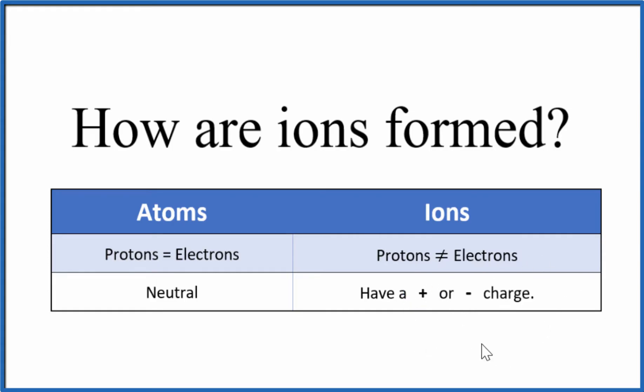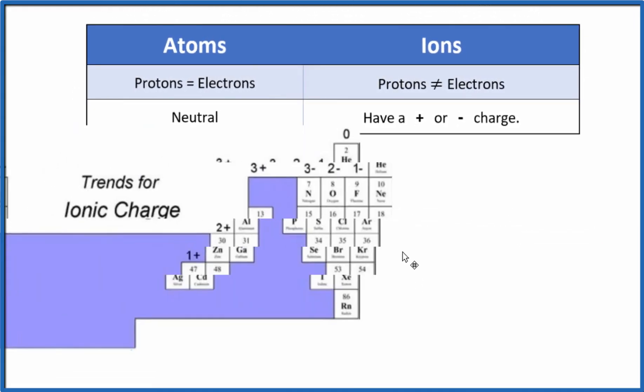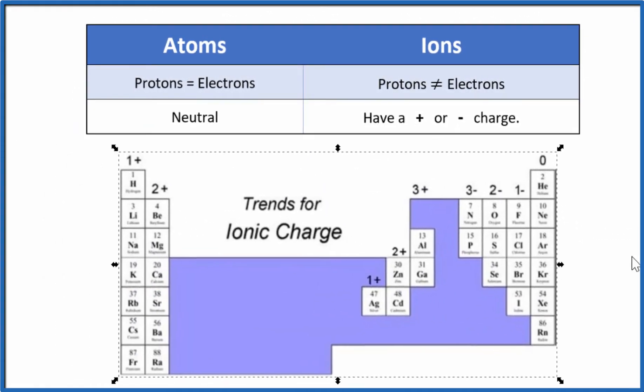And we can see a trend for how they'll lose or gain electrons on the periodic table. So here we have the elements. Elements in group 1 will actually lose an electron. These will all be 1+. Group 2, 2+.